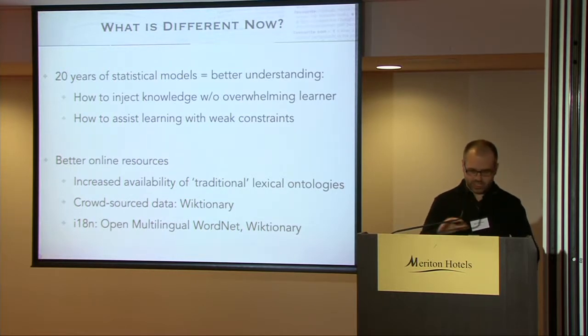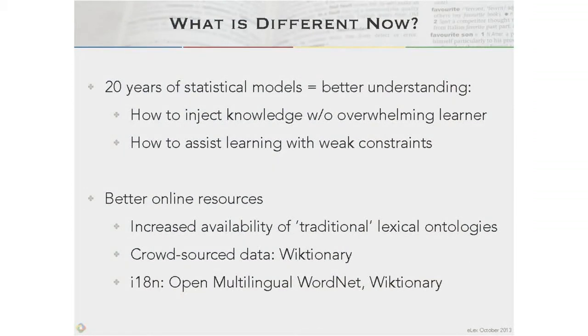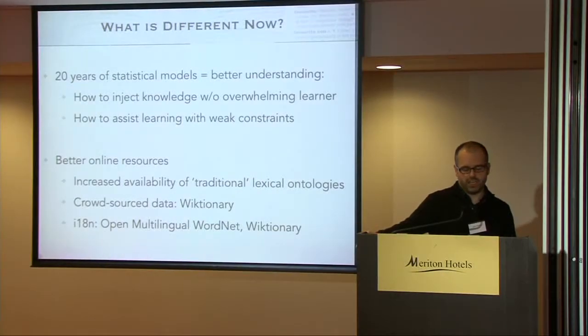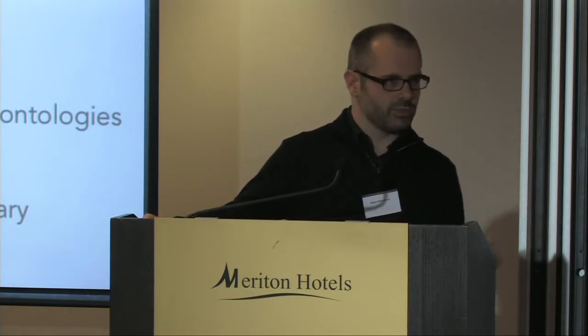We're now entering a really interesting point in NLP development. On one hand, we've had about 20 years of PhD research on statistical NLP systems, giving us much better understanding of how these interact with language learning and how to incorporate linguistic constraints without overwhelming the learner. On top of that, the amount of online resources has exploded — we have much richer information available today. Projects like the Open Multilingual WordNet cover 30 to 40 languages, and Wiktionary, a crowdsourced dictionary, currently covers about 170 languages.